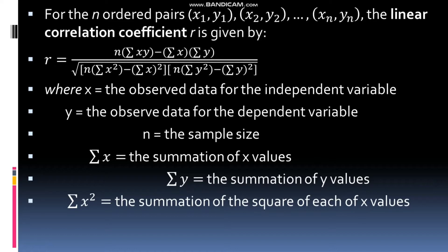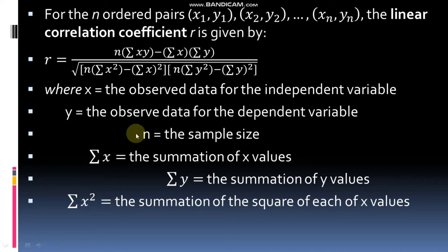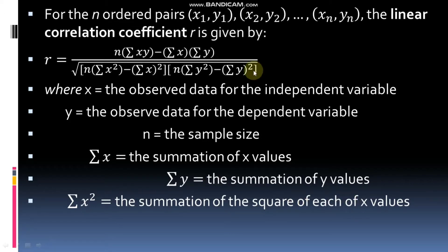Here is the formula for Pearson R, also known as the linear correlation coefficient: R equals that formula, where X is the observed data for the independent variable and Y is the observed data for the dependent variable. N is the sample size, and the summation symbol means you add all values. Summation of X means add all X values, summation of Y means add all Y values, summation of X² means sum of each X value squared, and summation of Y² means sum of each Y value squared.